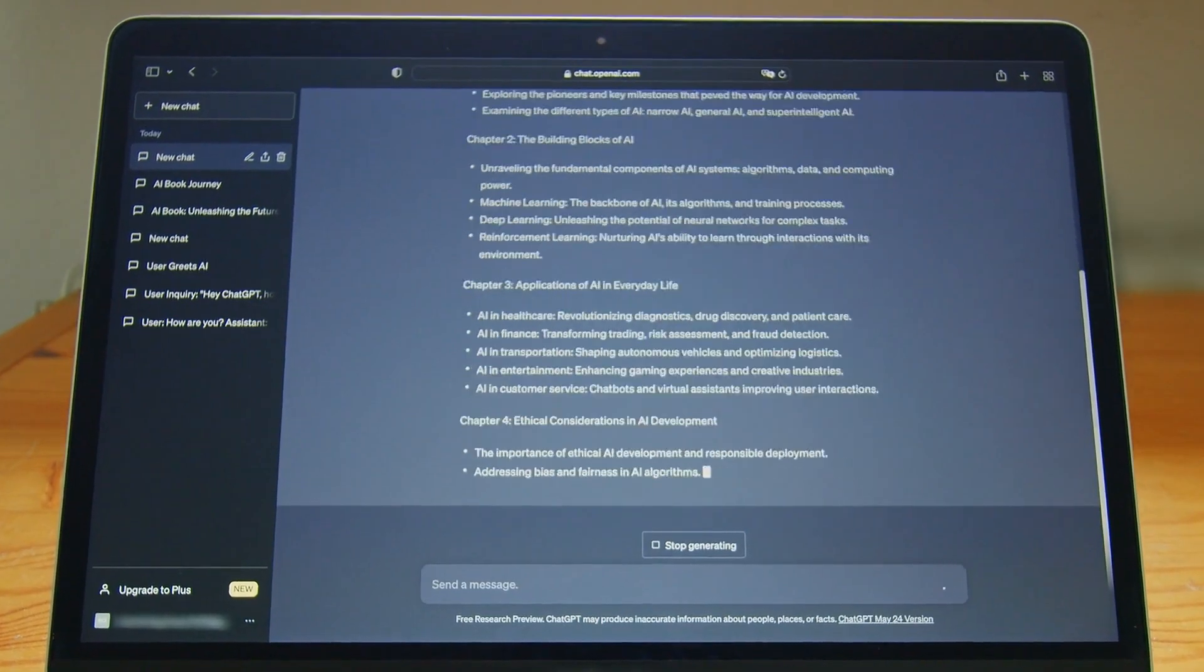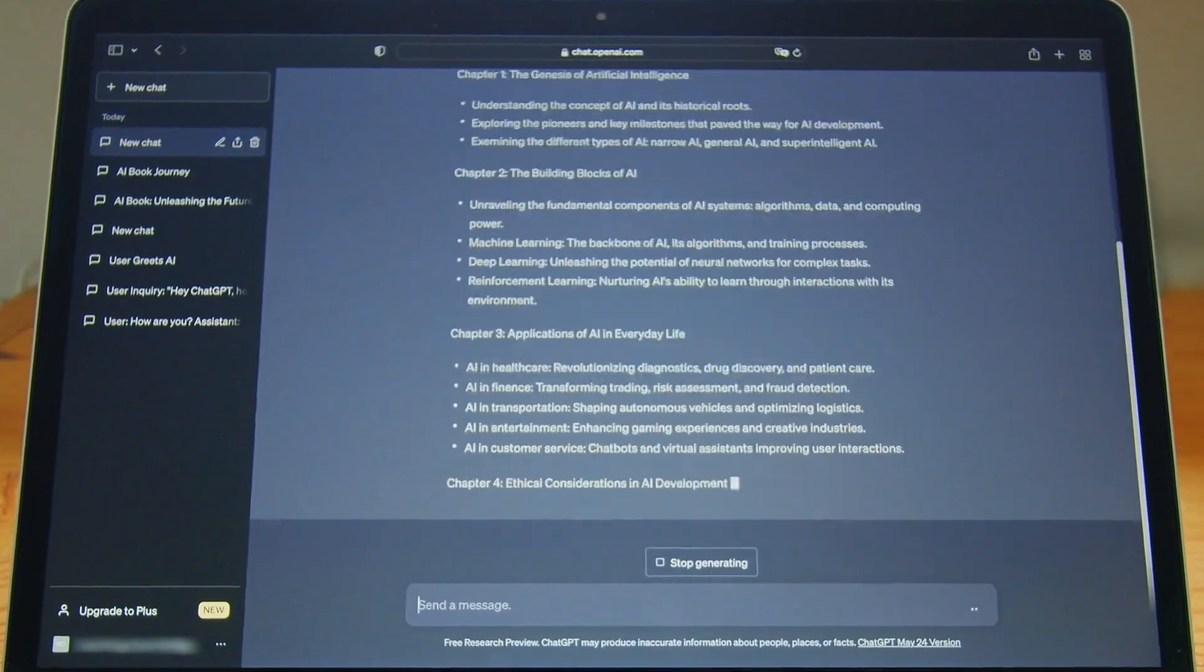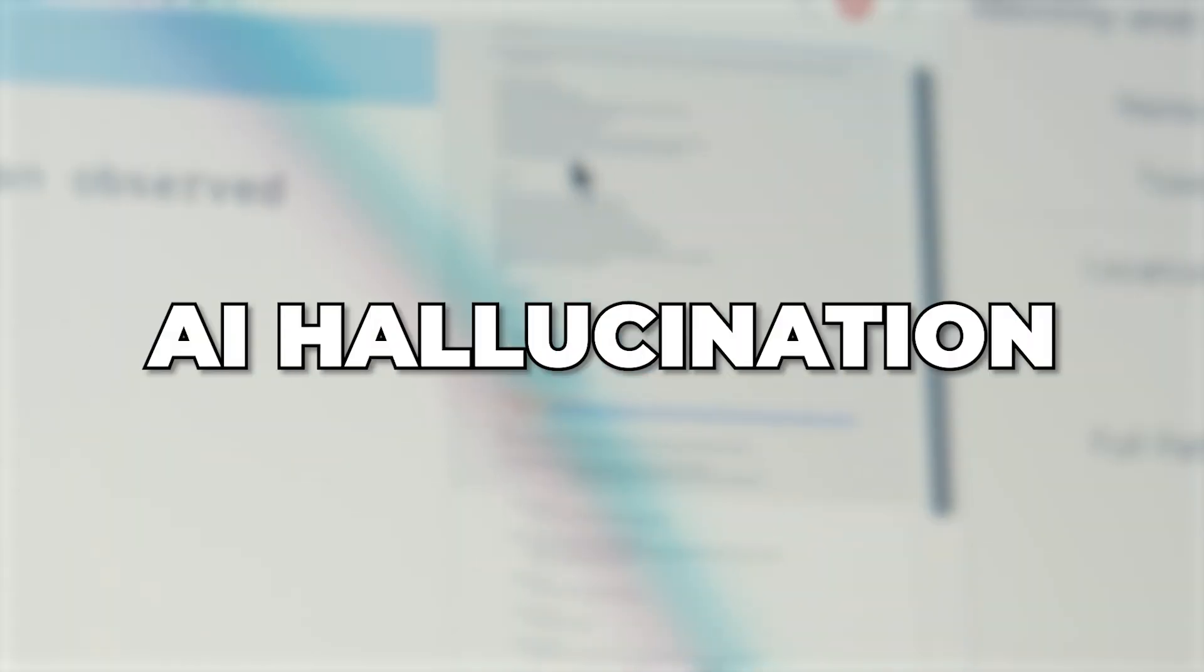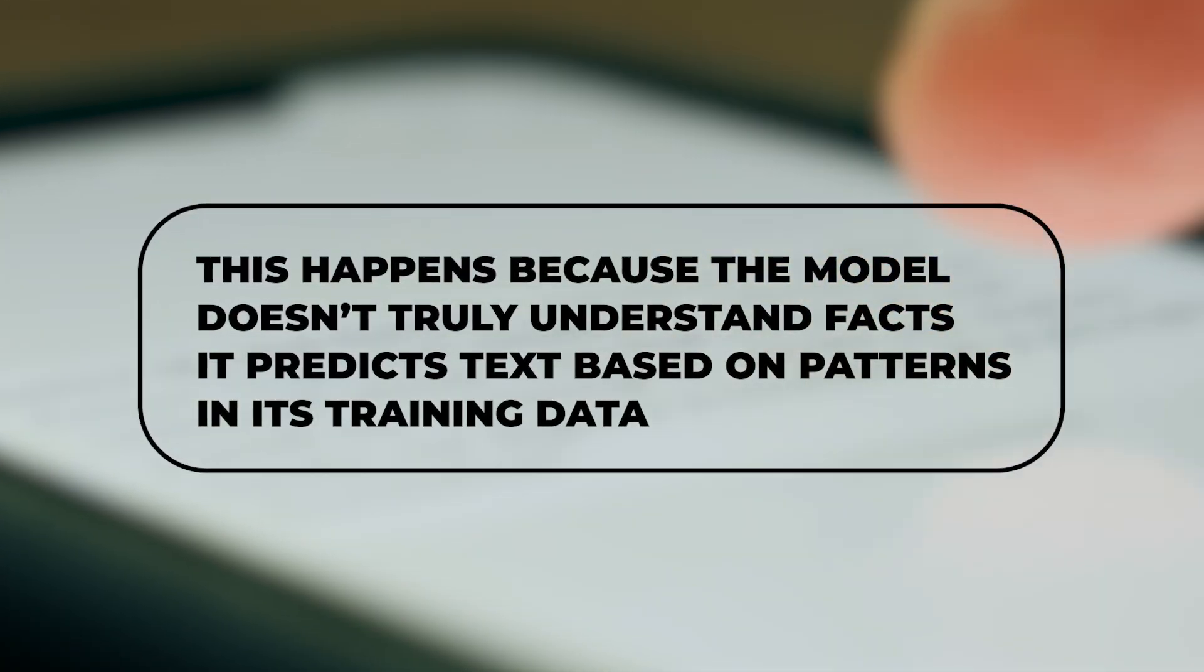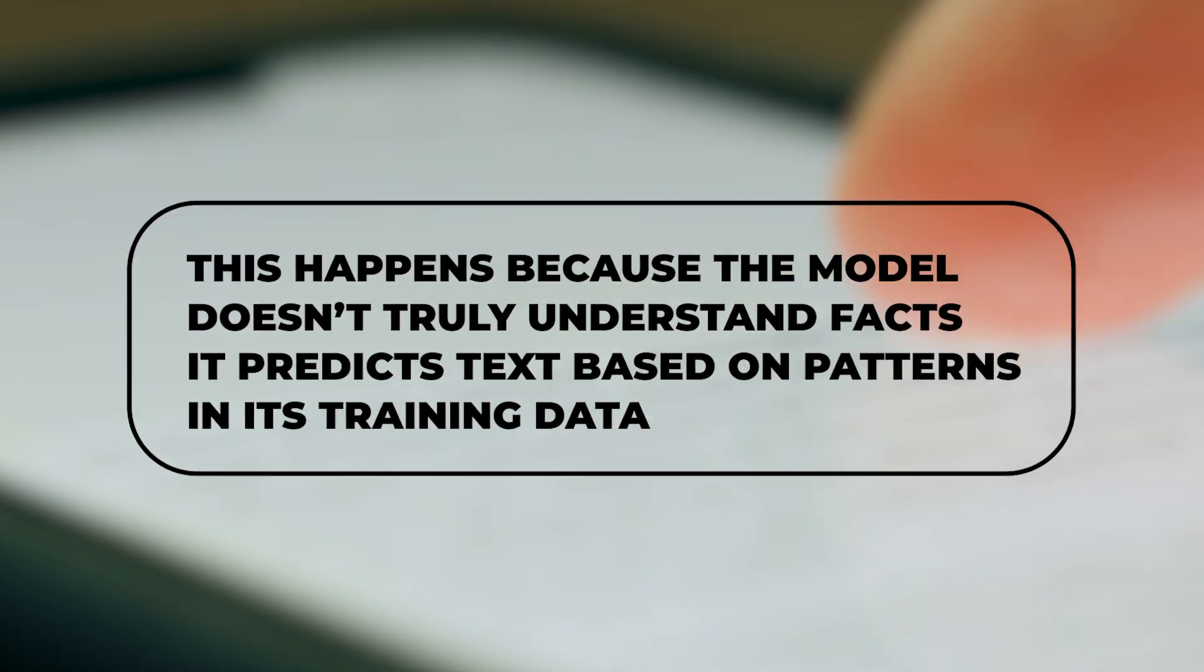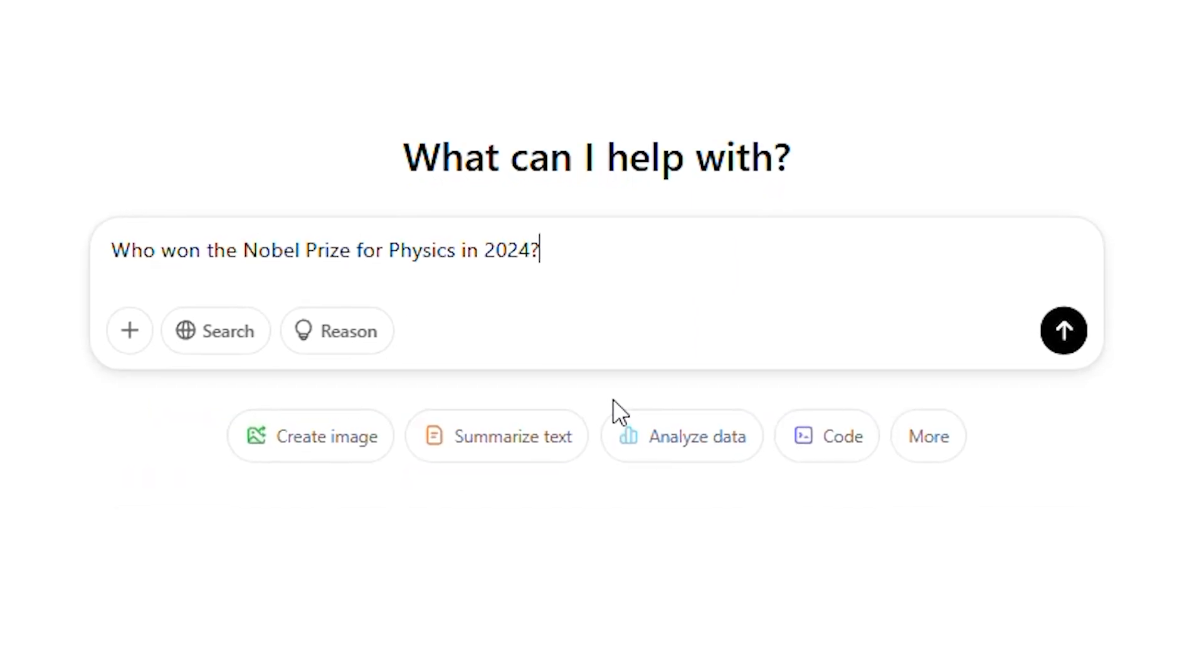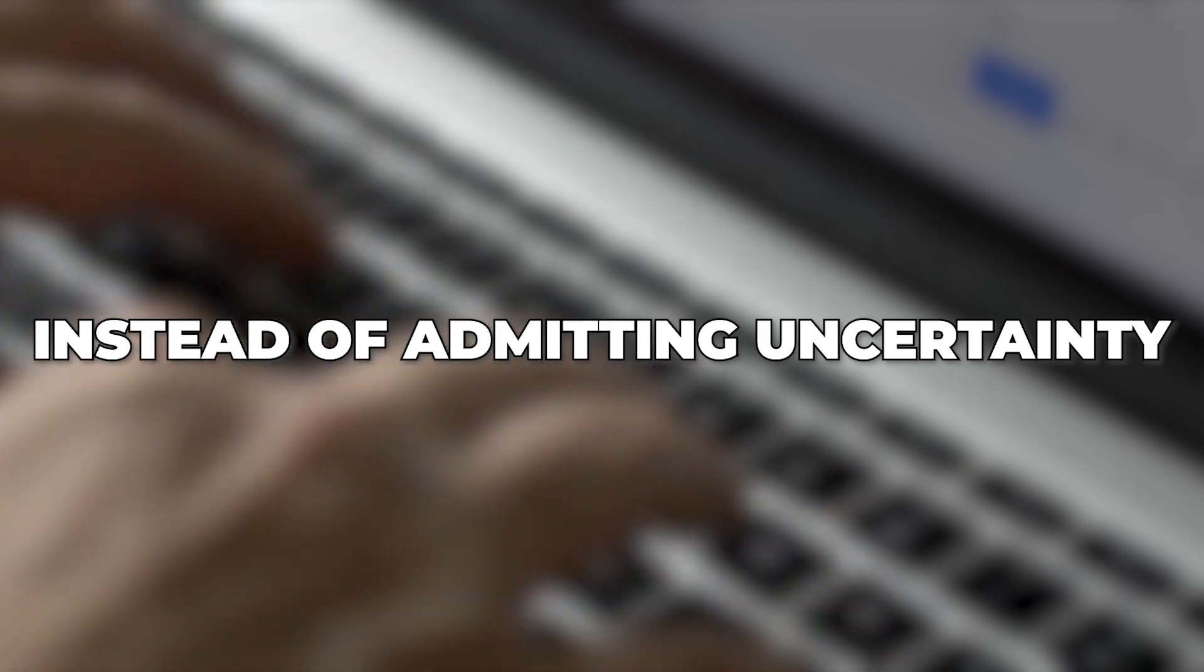Despite being a cutting-edge AI, ChatGPT sometimes generates false or misleading information, a phenomenon called AI hallucination. This happens because the model doesn't truly understand the facts. It predicts text based on patterns in its training data. So if you ask it, "Who won the Nobel Prize for Physics in 2024," and this information hasn't been widely documented in its dataset, it might guess an answer instead of admitting uncertainty.